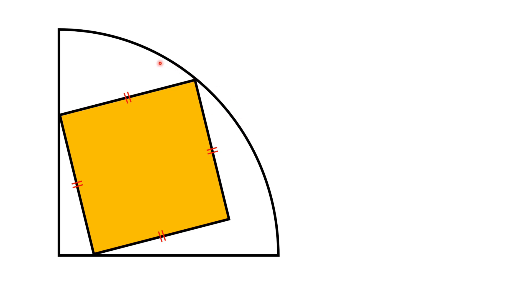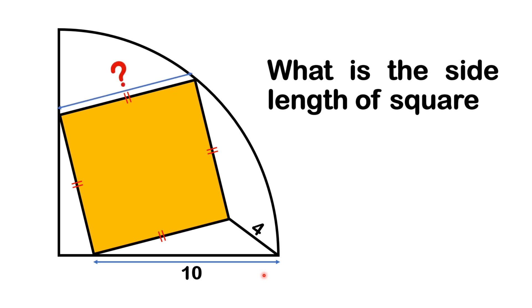The fourth corner is lying inside the quarter circle in such a way that this length is equal to 4 units. Moreover, this length is equal to 10 units. By this limited data, we have to find the side length of the square.